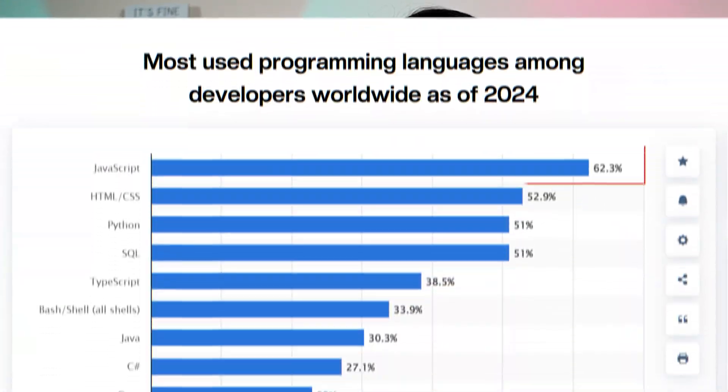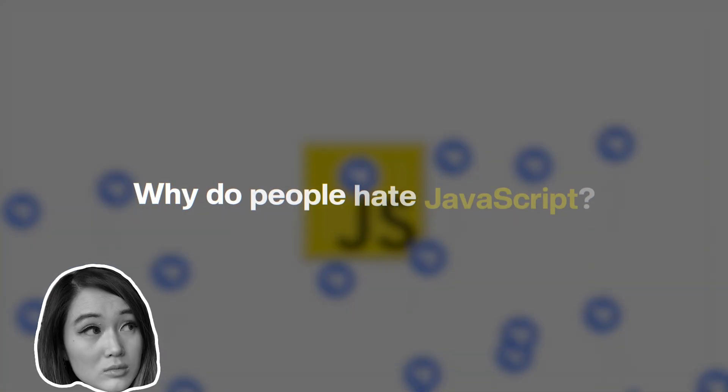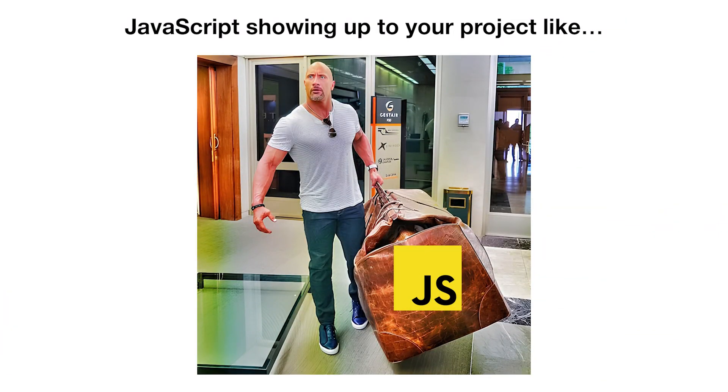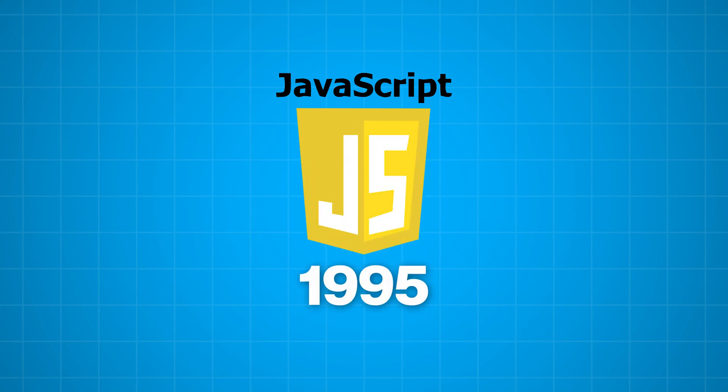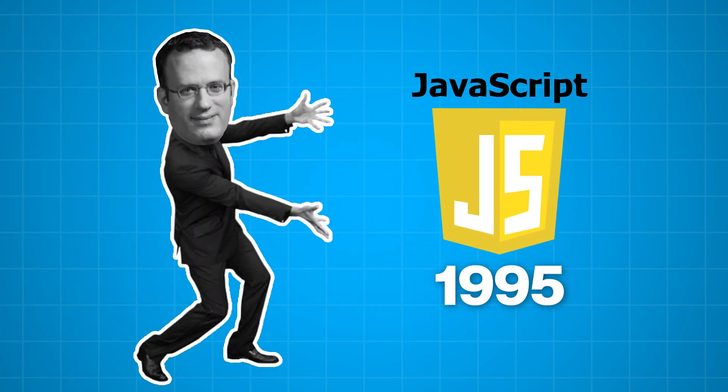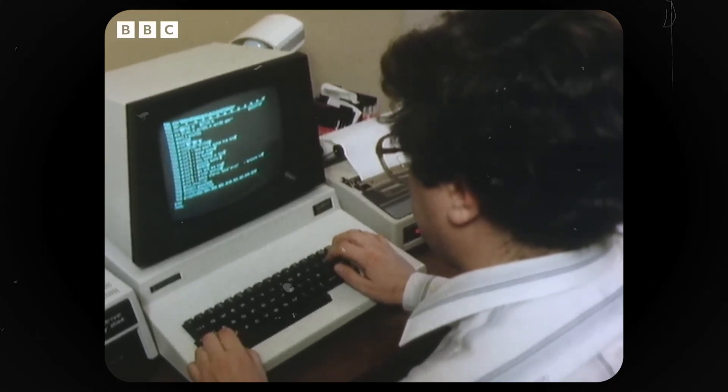JavaScript is one of the most popular programming languages in the world, but it's also one of the most hated. Why do people hate JavaScript? JavaScript comes with a lot of baggage. It was thrown together in just 10 days back in 1995 by one guy and was meant to be a lightweight scripting tool to add basic interactivity to web pages. It was never designed for the huge complicated apps we're building today, so it has its quirks — enough to trip up even the most experienced developers.